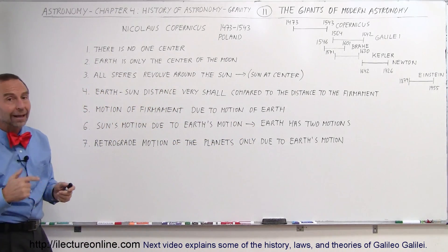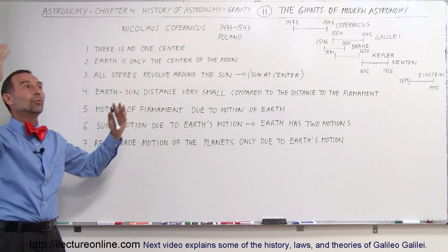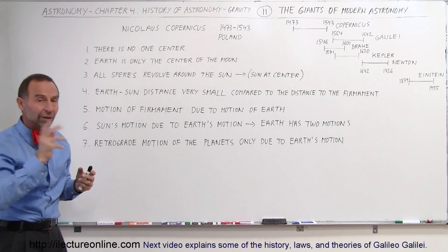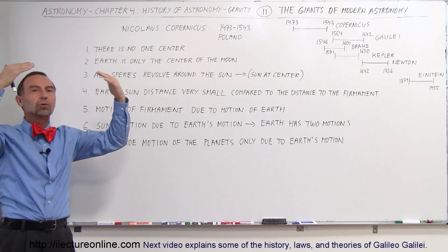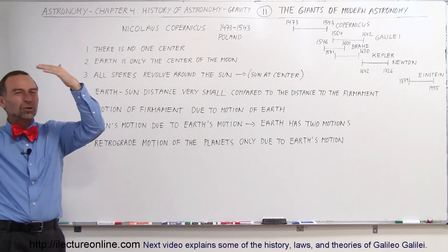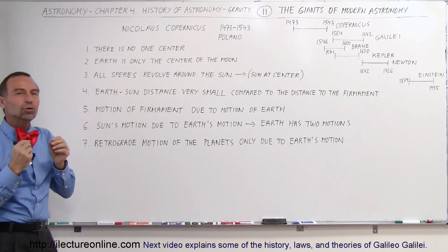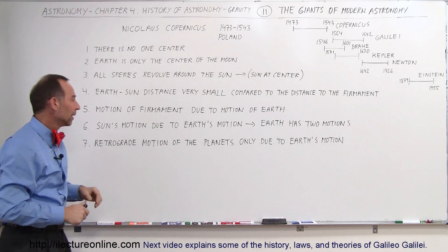Two motions because on any given day, everything seems to revolve around the Earth. That's because of one type of motion, and then things would change. The position of the firmament would change from day to day, from week to week, from month to month, and that was due to another motion of the Earth. And so finally,